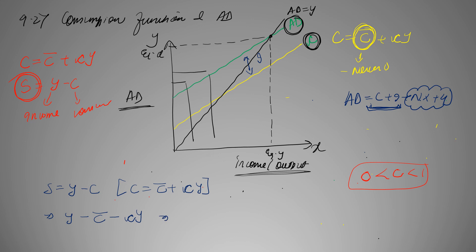If we take Y common and keeping autonomous C aside, we have negative C bar plus Y times 1 minus C. And that is our saving function. Where 1 minus C is our MPS or marginal propensity to save. It is part of income that you save.